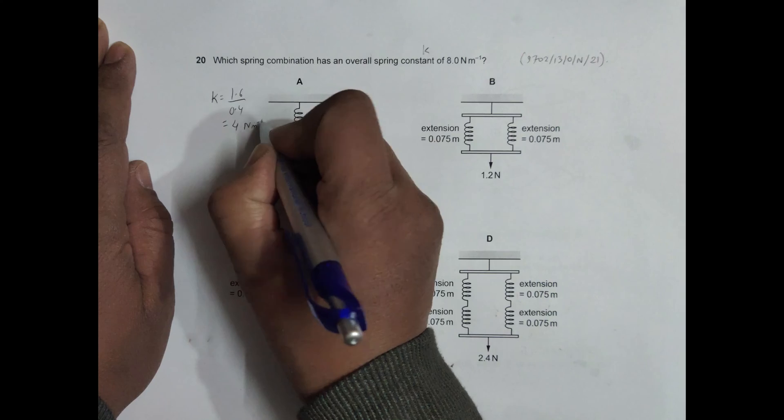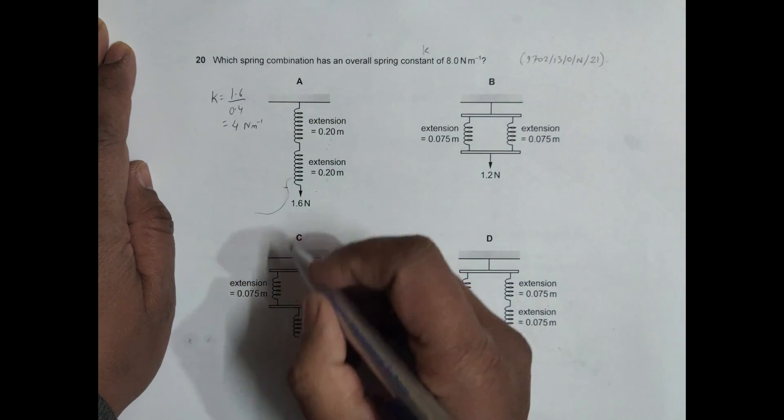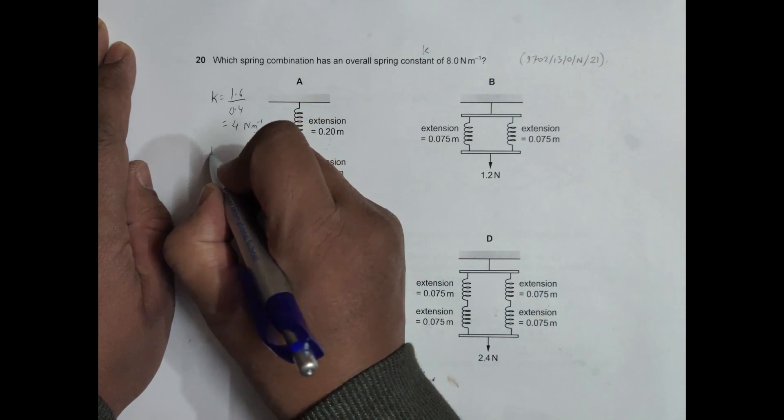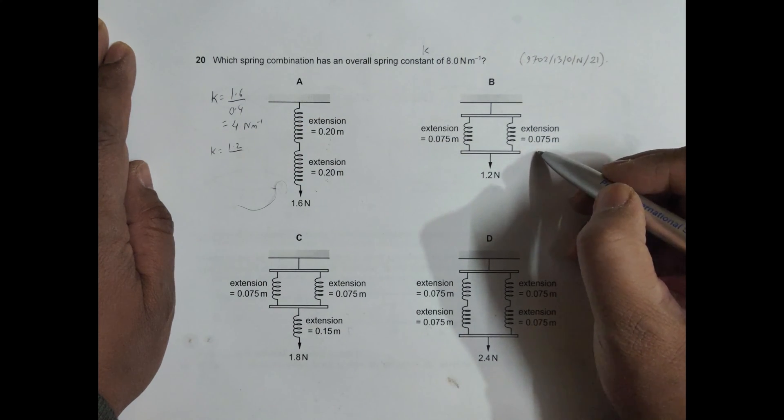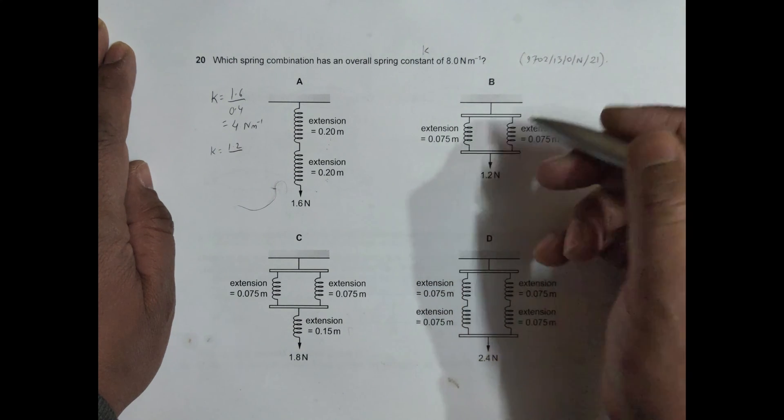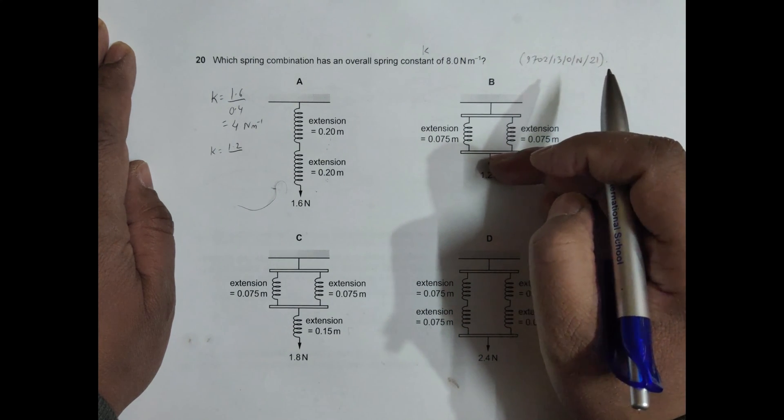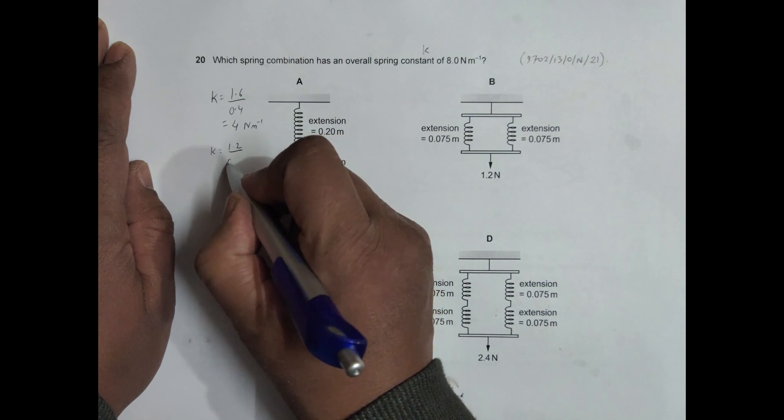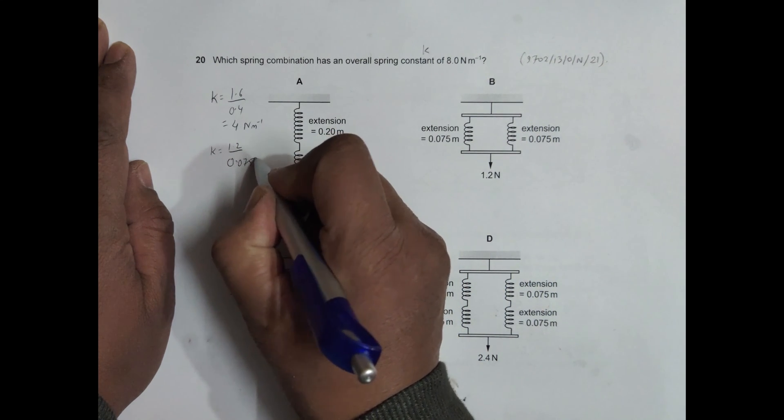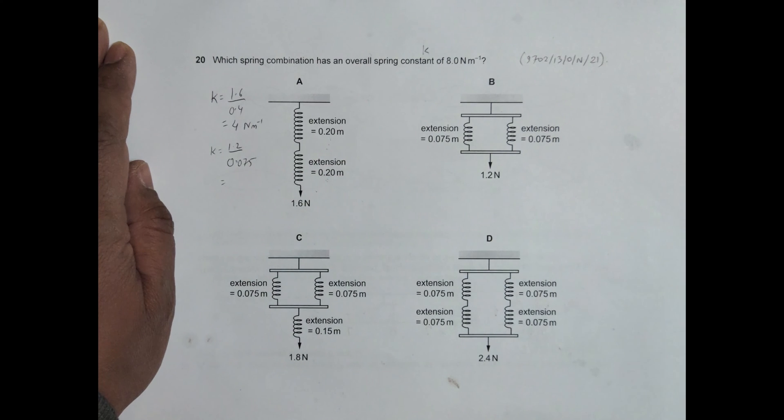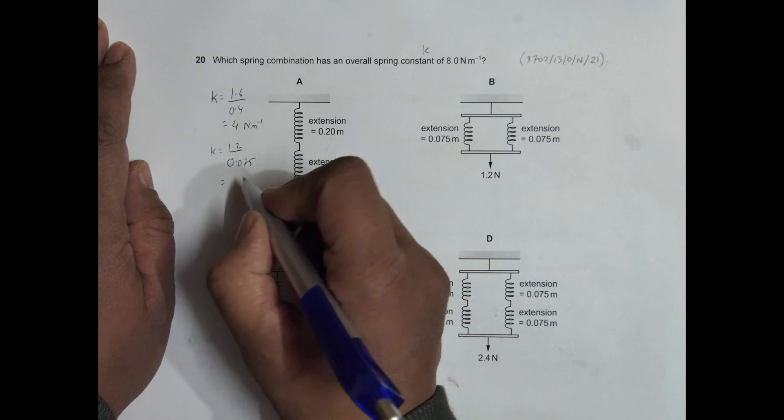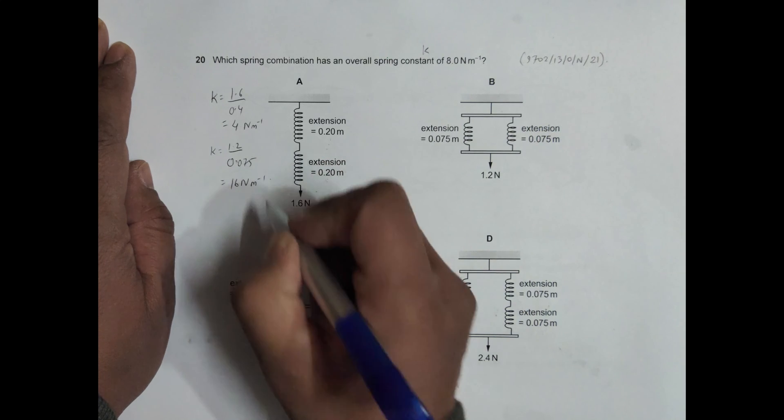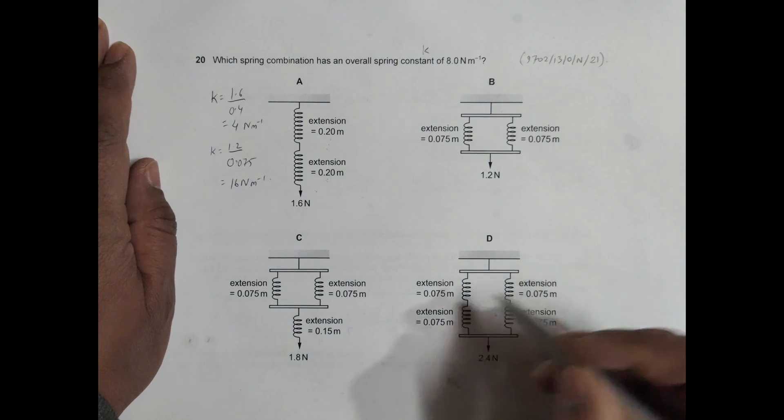For B, our K is equal to the force 1.2 when it extends by 0.075. The whole system comes down by 0.075, so that's why the extension should be equal to 0.075. It should be 1.2 divided by 0.075, which equals 16, so it is 16 Newton per meter.